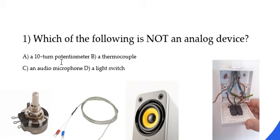The very first one we have is a 10-turn potentiometer. This is actually an analog device because it allows you for continuous and precise adjustment of your electrical resistance along its length. As you turn the knob, it can produce an infinite number of resistance values within its specified range.